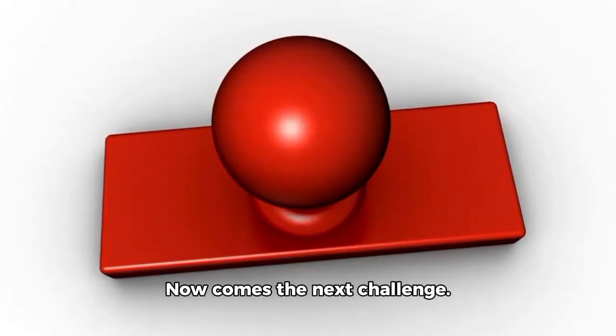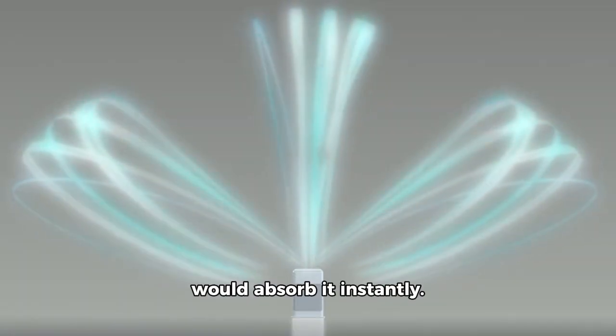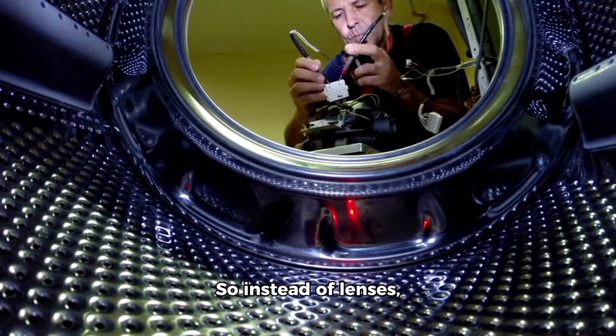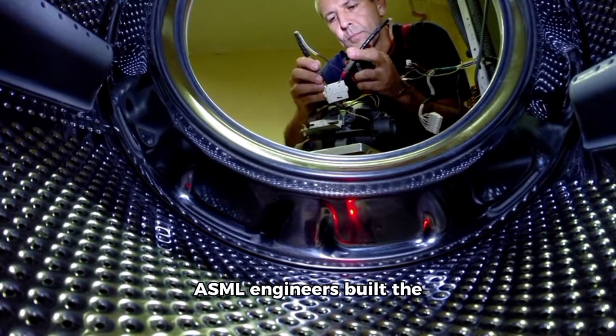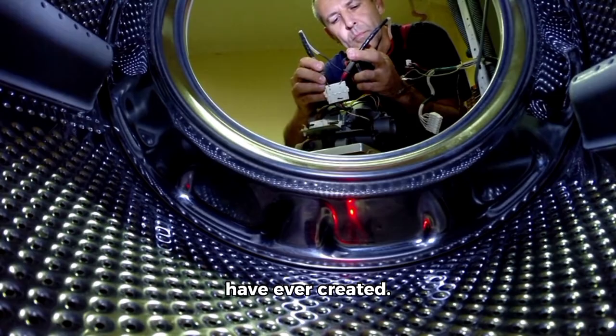Now comes the next challenge. EUV light is so energetic that lenses would absorb it instantly. So instead of lenses, ASML engineers built the flattest mirrors humans have ever created.